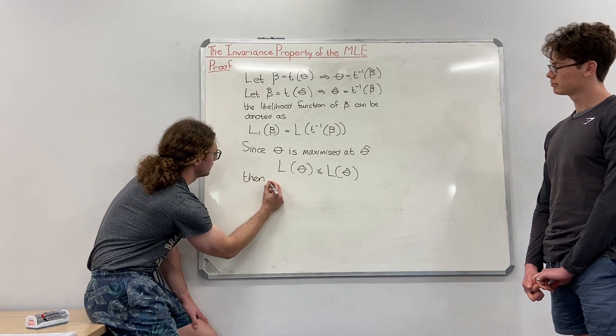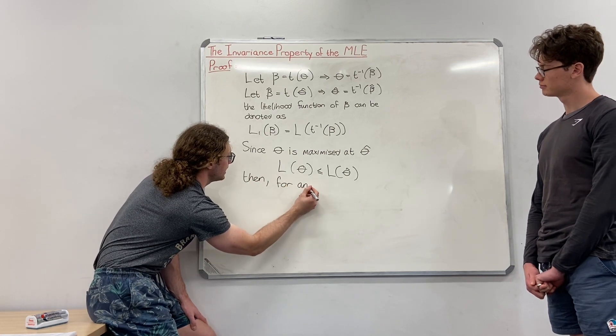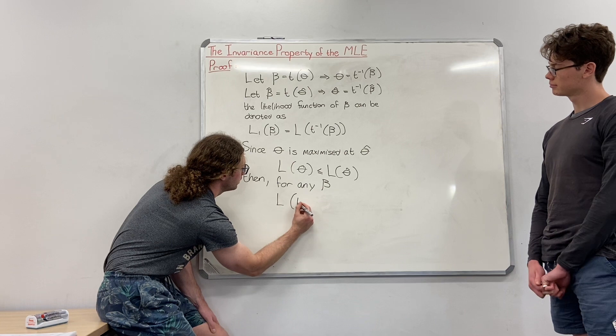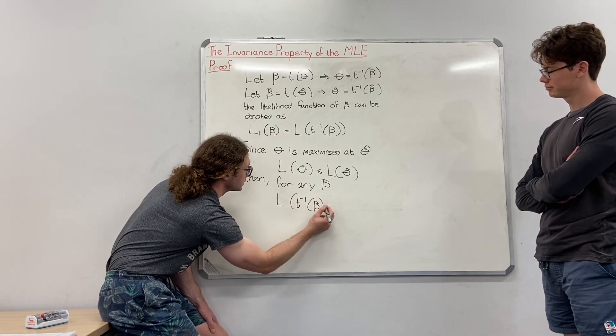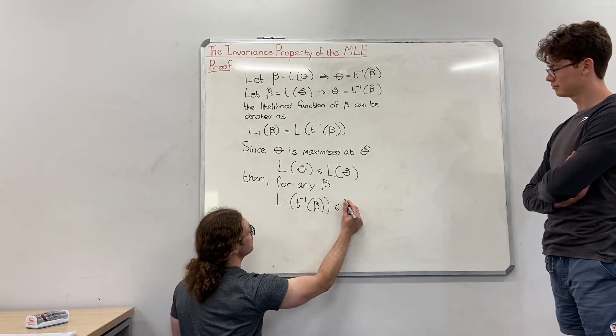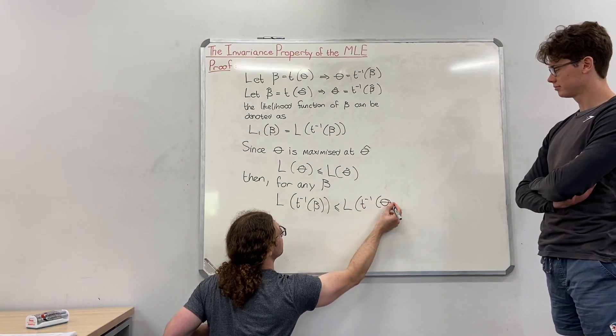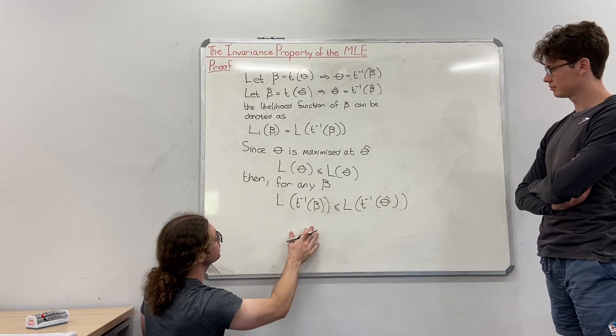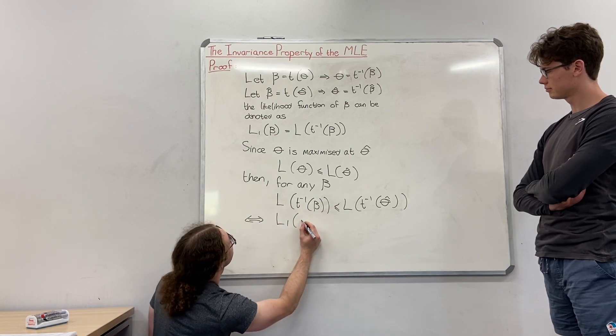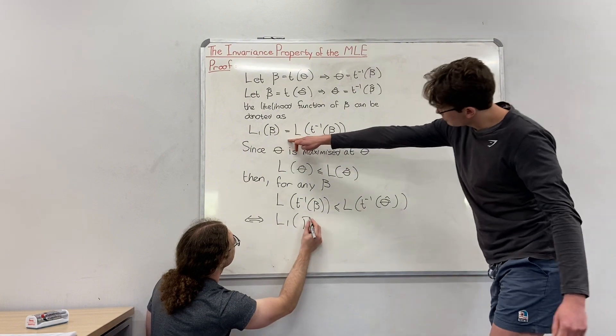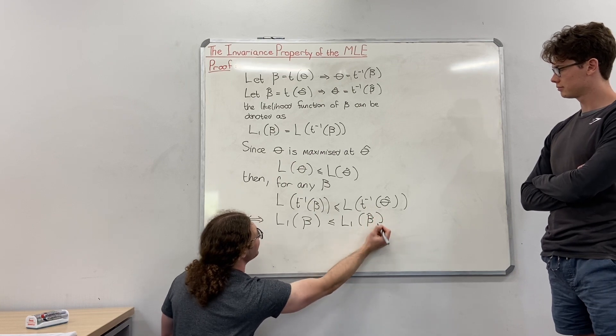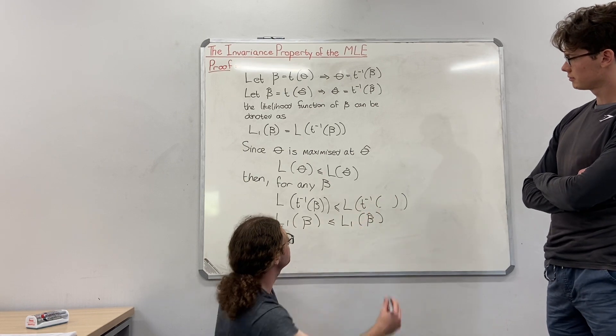Then for any beta, you can also see that L t inverse beta, because theta is equal to t inverse beta as stated above, will be less than L t inverse theta hat, which is equal to L1 beta. So this should be L1 beta hat. This should be beta hat. My mistake.